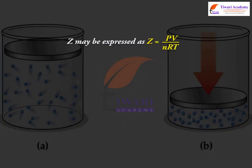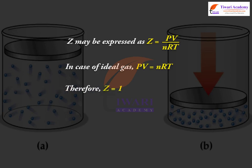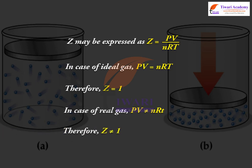Z may be expressed as Z = PV / nRT. In case of an ideal gas, PV = nRT, therefore Z = 1. In case of a real gas, PV is not equal to nRT, therefore Z is not equal to 1.